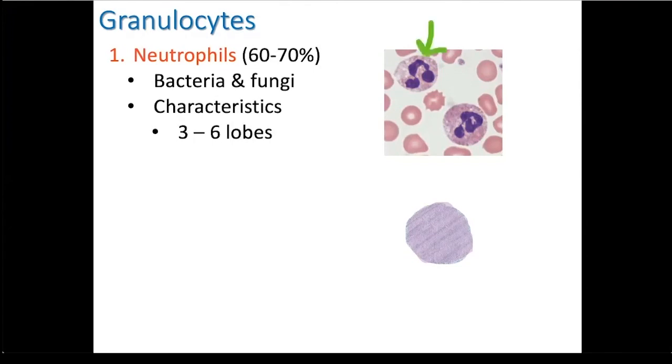I'll use the illustration at the bottom to demonstrate the lobes for the cell at the tip of the green pointer. This is the first lobe, second lobe, third lobe, and a fourth lobe.